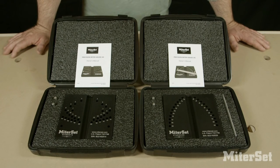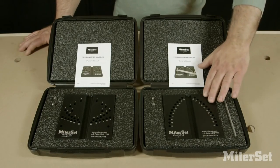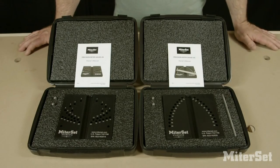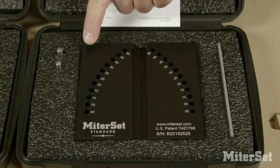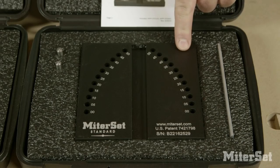There's MiterSet Standard and there's MiterSet Segment. MiterSet is an aluminum anodized and laser etched plate that's bisected by a miter slot. Each side has a series of holes.